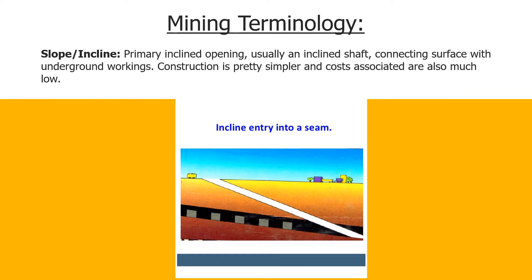Slope or incline is a primary inclined opening, usually an inclined shaft connecting surface with underground workings. Its construction is simple and the cost associated is also much low.